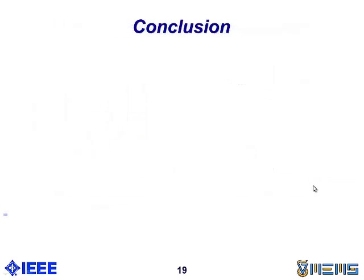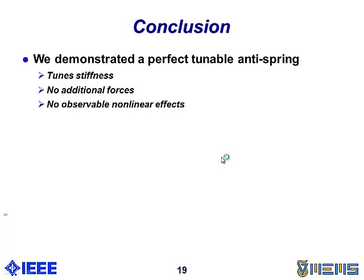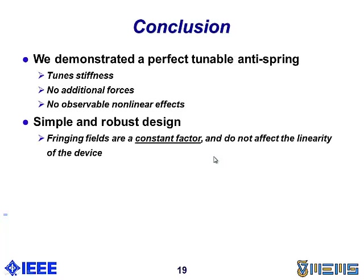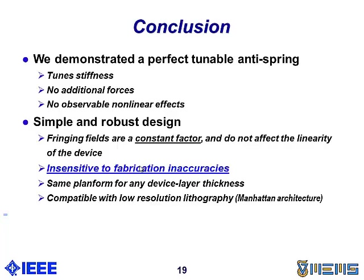To conclude, we demonstrated a perfect tunable anti-spring. We can tune the resonance frequency or tune the stiffness with this device. We have no additional forces. We have no observable nonlinear effects. The design is really simple and robust. The fringing fields are a constant factor and do not affect the linearity of the device. Therefore, this design is insensitive to fabrication inaccuracies such that would produce narrower or wider comb fingers. We can use the exact same planform for any device layer thickness. It's compatible with low resolution photolithography because we just have a Manhattan architecture. And because we're not using curved fingers, we can pack in more fingers per area and get more force.